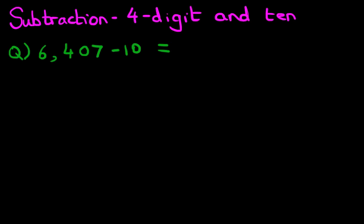Now the first stage is we're going to rewrite this question from the horizontal format into the vertical format. So let's do that over here. 6,407 minus, make sure you write this in the right place, minus 10.